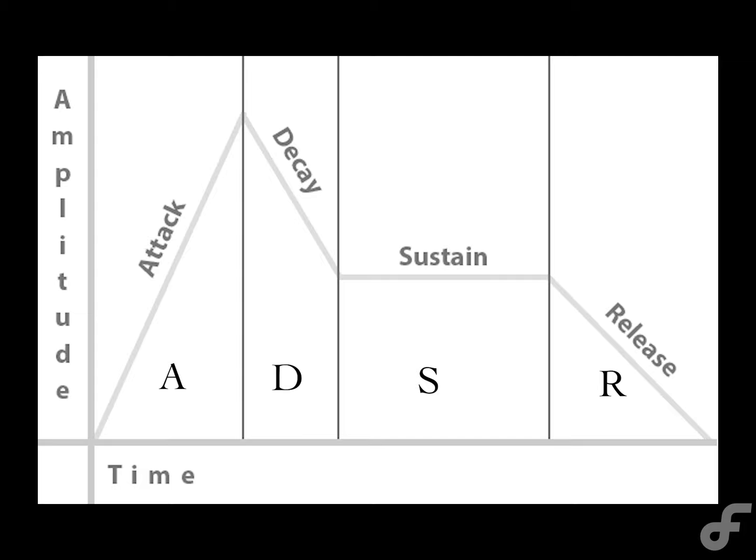When looking at the envelope on most synthesizers, we commonly see ADSR — attack, decay, sustain, and release. But what do those words actually mean? They are simply the different points in modulation that an envelope has. So an ADSR envelope has four points in modulation: attack, decay, sustain, and release.